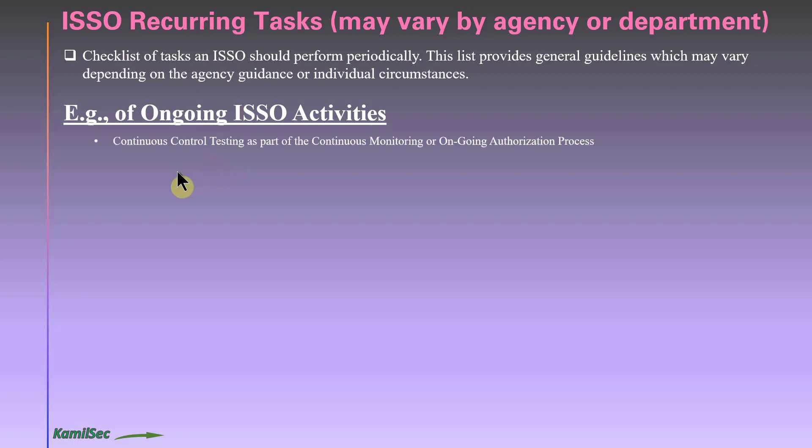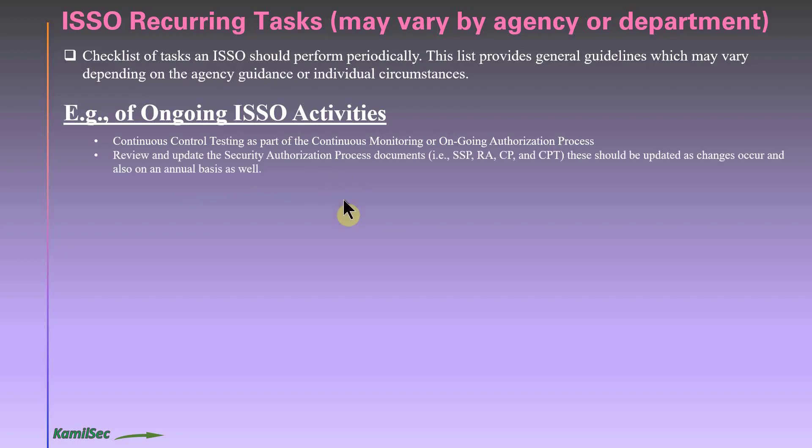For ongoing ISSO activities: first, continuous control testing as part of the continuous monitoring and ongoing authorization process. Second, review and update security authorization process documents — that is, the System Security Plan (SSP), risk assessment documentation, contingency plan, and contingency plan testing. These should be updated whenever changes occur and on an annual basis.